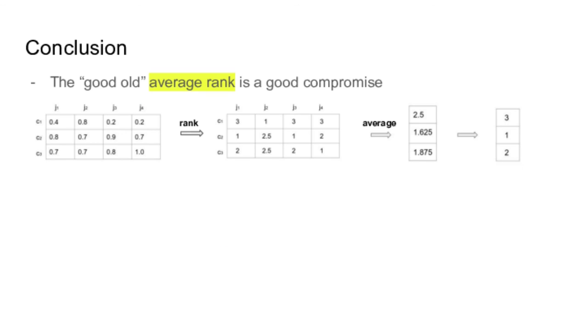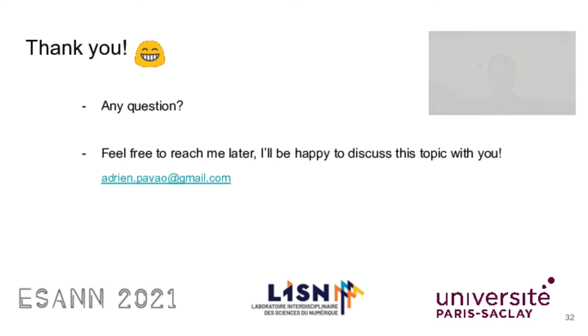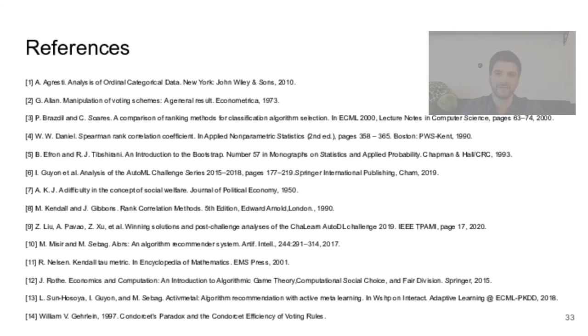So to conclude, the average rank function is really a good compromise and it's easy to interpret. But relative difference and Copeland's methods are actually really good and obtain good empirical results, especially relative difference, which shows a good stability under judges perturbation. Thank you very much for your interest. Of course, more details are provided in the paper and you can contact me if needed. That's all. Thank you.